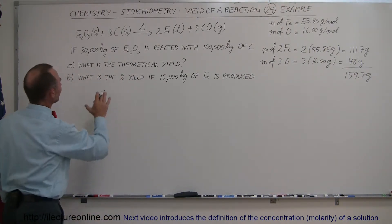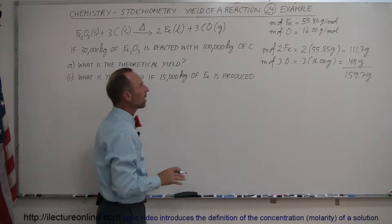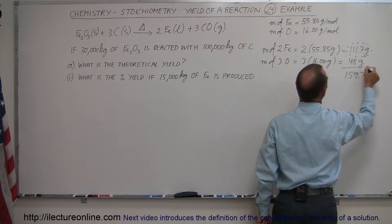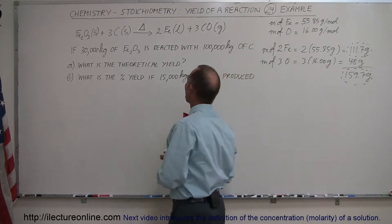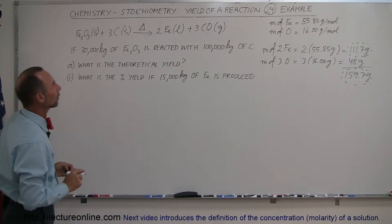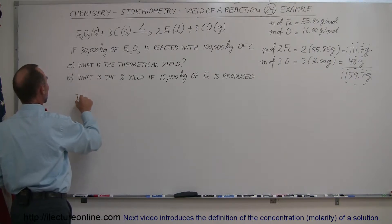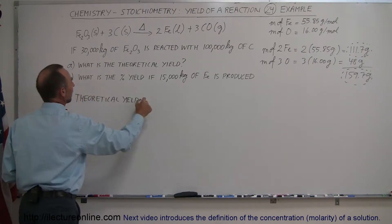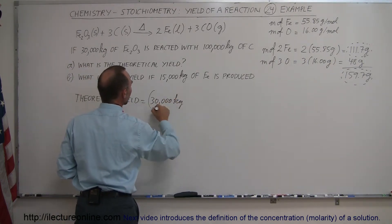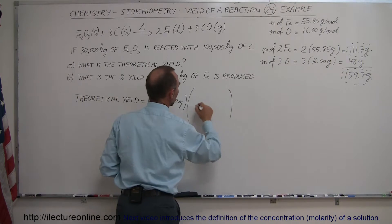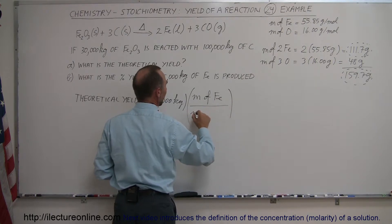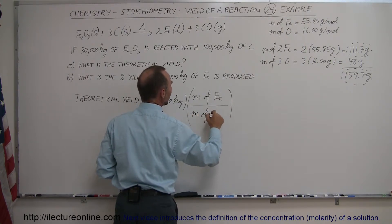Now to find the theoretical yield, we can assume that out of the total mass, a certain fraction will be iron. The theoretical yield is equal to the amount we started with — 30,000 kilograms — multiplied by the ratio of the mass of all the iron divided by the mass of the iron oxide.